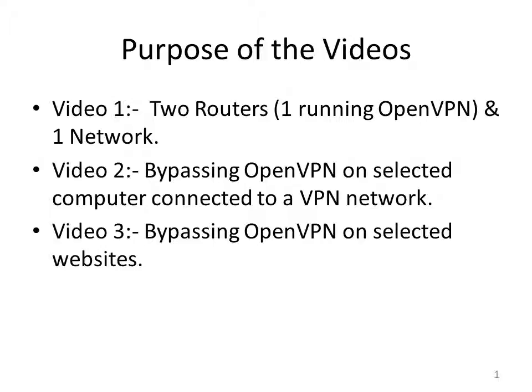The first video of the series is about how to connect two routers, one of them running an OpenVPN account and running DDWRT. The second video is about how to bypass the VPN on a selected machine connected to the VPN network. Video three is about how to bypass the VPN on a selected website — so if you wish to go to YouTube and don't want to use the VPN, that's the tutorial for you. All three videos can be watched independently, and all three assume you have successfully set up your VPN client attached to a router running DDWRT.